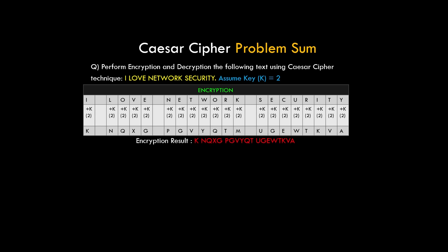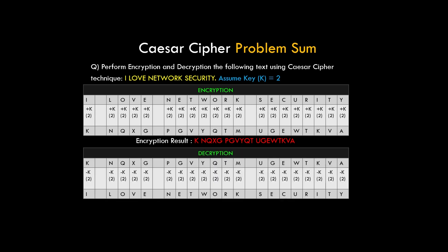Now let's perform decryption, which is the reverse process of encryption. Write down the encrypted text leaving some spaces in between, or draw a table as shown. Write minus 2, since the key value is 2, and we need to find the alphabet that lies 2 places before the current alphabet. Calculate the alphabet 2 places before it for all alphabets and you'll get back your original text.